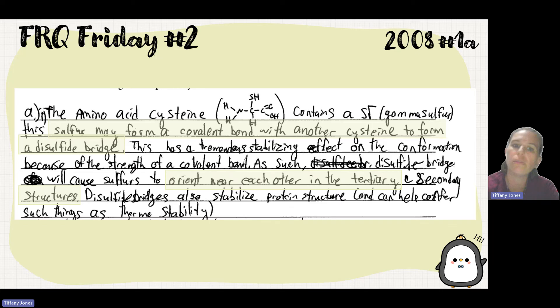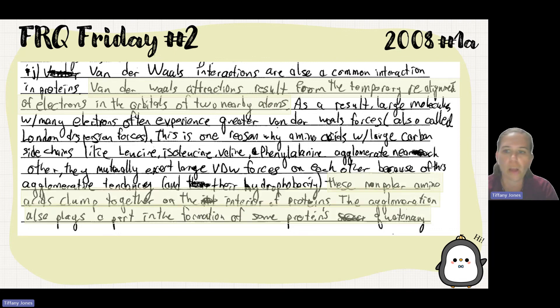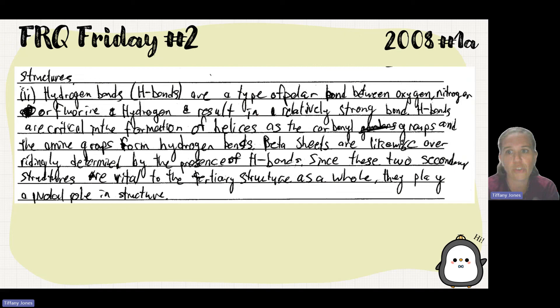They talk about van der Waals and give an in-depth explanation about electron orbitals and these weak forces called London dispersion. They continue about non-polar amino acids clumping together on the interior of proteins. They then talk about hydrogen bonds being polar bonds between oxygen, nitrogen, or fluorine, resulting in strong bonds. H-bonds are critical in the helixes we see with the alpha helix as well as the beta linkage. Since they're talking about secondary structures, they get the point.